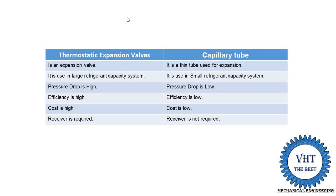When we use the expansion valve, we require a receiver to separate the liquid and vapor coming out after the expansion device. When we use capillary tubes, the receiver is not required.